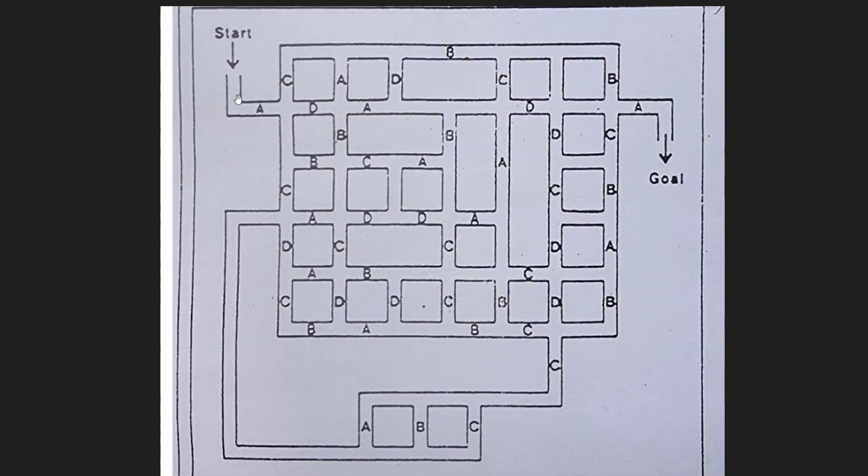So for example, you're right here, let me say you go through this A, you can only go through a B, then you can only go through a C and then a D. You cannot go back through the C, backtrack and then go down here through a D. You have to continually move forward. So after the C you have to go through the D, the A, etc.